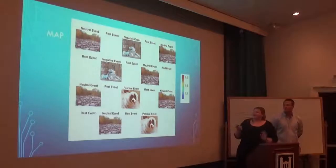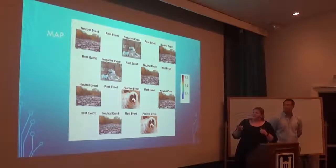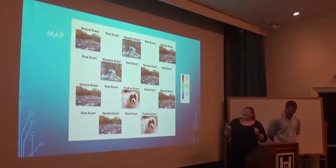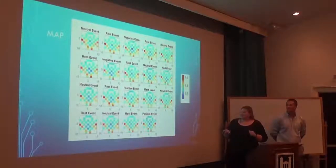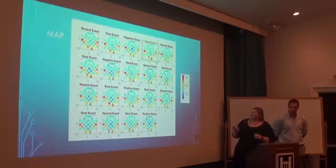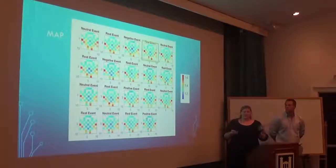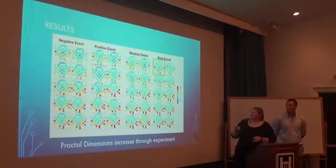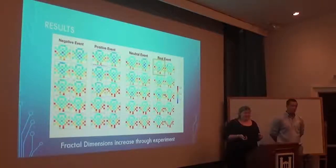Here are the first 19 data points for one subject. You can see a neutral image, a negative image, and a positive image — like a cute little dog — each corresponding to specific fractal dimension maps for those events. One interesting finding: looking at the rest periods — there are about 10 per patient across 196 events per subject — you can see a general trend that as the experiment goes on, the colors get warmer, meaning fractal dimensions increase throughout the experiment.